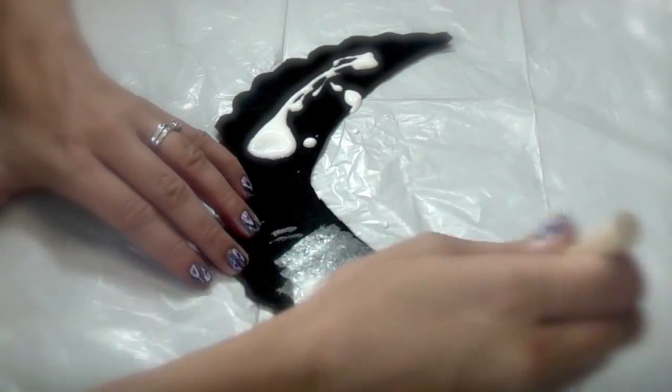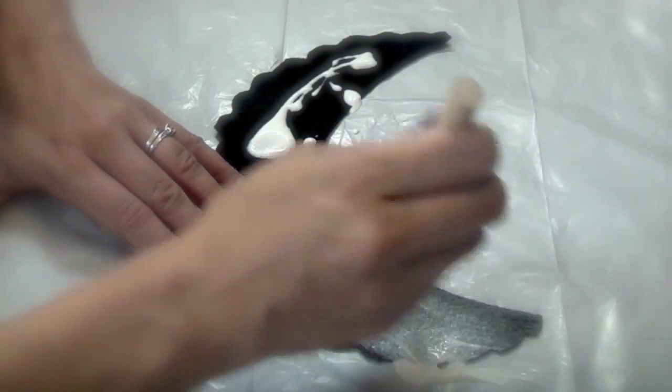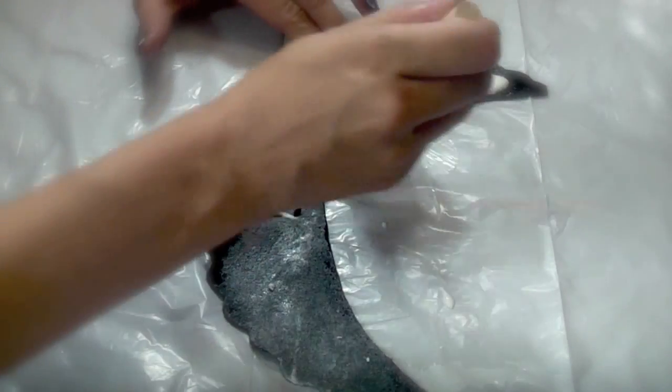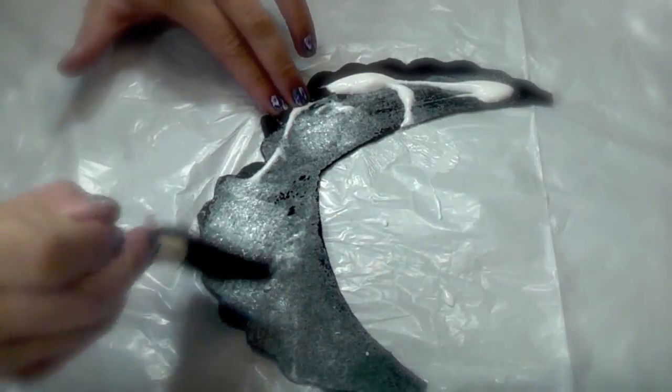Using a sponge brush, I'm just going to spread it all out. Now I'm adding more because the felt really absorbs the Mod Podge, and I wanted to make sure that the surface was sticky. So yeah, that's why I use so much.